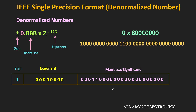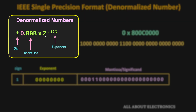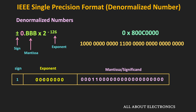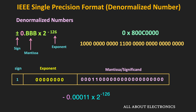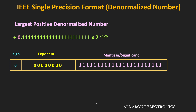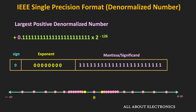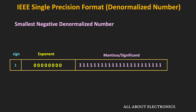Now let's find the value of this number. Any denormalized number can be represented in the standard format, where b represents the mantissa part. Since the sign bit is equal to 1, the given number is negative. Since the exponent field is 0, the exponential term is equal to 2^-126. The mantissa field is equal to 0011, giving us the value of this denormalized number. Just by looking at the exponent and mantissa fields, we can easily determine whether a number is normalized or denormalized. When all bits in the mantissa field are 1, that represents the largest value of the denormalized number, which on the number line is very close to the smallest normalized number.